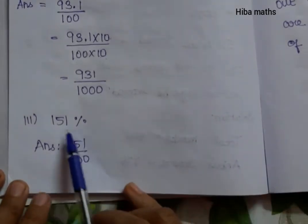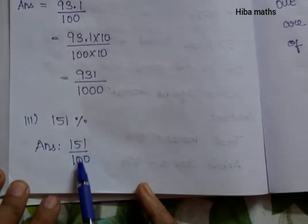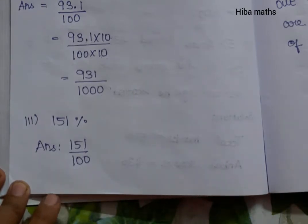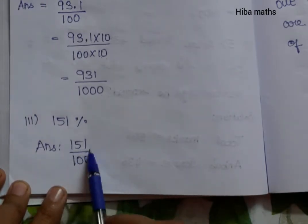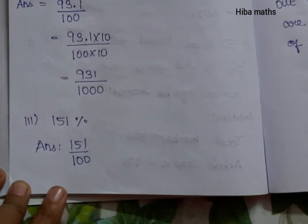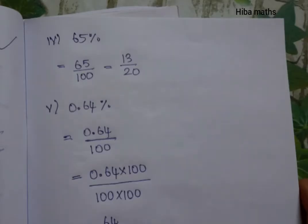The third question is 151%. This follows the same approach: just 151 divided by 100. Now we can move to the fourth question.